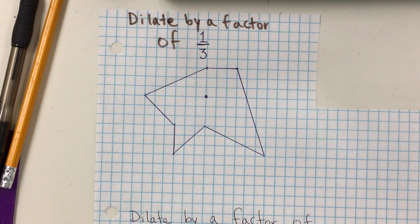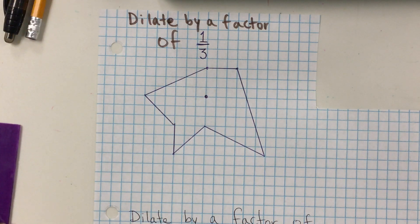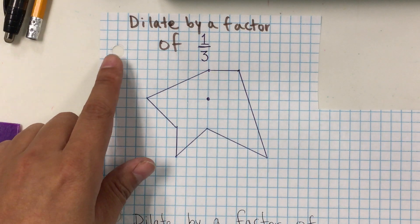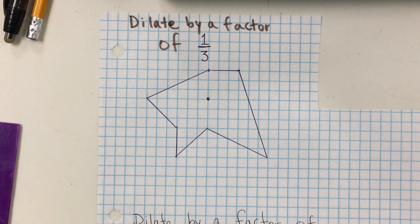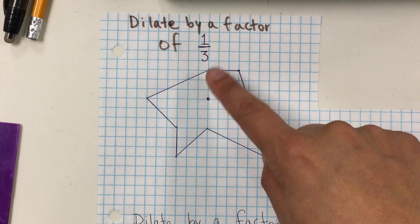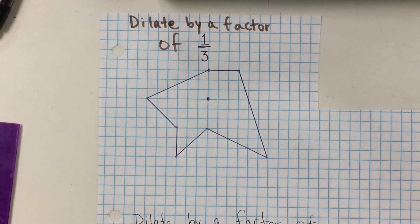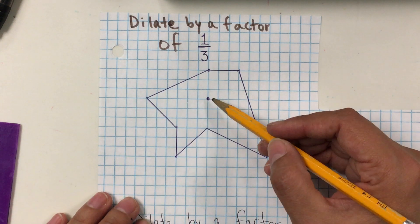Hello students, today we're going to continue on section 9.4.5, which is related to 9.4. We're going to be dilating and compressing figures by a rational ratio. In this example, it says dilate by a factor of one-third.